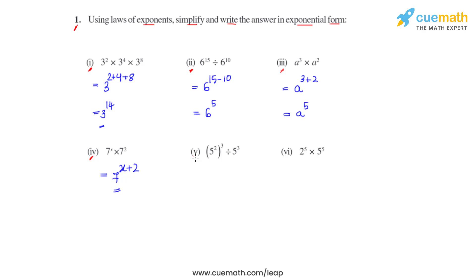In the fifth bit, we see two different laws being used. First, 5 raised to 2, whole raised to another power 3 — in such cases the powers get multiplied, giving us 5 raised to 2 times 3, which is 6. This is then divided by 5 raised to 3. Applying the quotient law, we write 5 raised to 6 minus 3, which gives us 5 raised to 3.